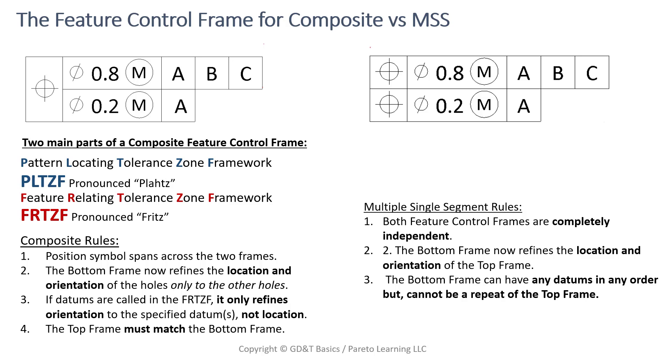So now getting over on the multiple single or multiple single segment side. On this one, where Joseph had said that he was entering composite as multiple single segment. As I stated already, the two frames are independent of each other. But look at rule number two in here. The bottom frame now refines the location and orientation of the top frame. So it's location and orientation at this point. It's not just orientation like it was over here on composite. It's also including that location. So now it's a location refinement as well. And then number three here, it says that the bottom frame can have any datums in any order, but it cannot be a repeat of the top frame. So in composite where we have to repeat the top frame, multiple single segment, we cannot repeat that.